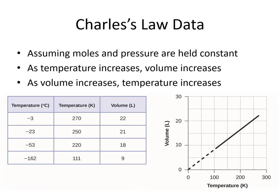We can graph Charles's law data. Putting volume on one axis and temperature on the other, we should get a nice straight line — and the temperature does need to be in Kelvin for these graphs. Charles's law makes some assumptions similar to Amontons' law: moles and pressure are held constant. As long as those two variables are held constant, temperature and volume can vary with each other in this linear manner.